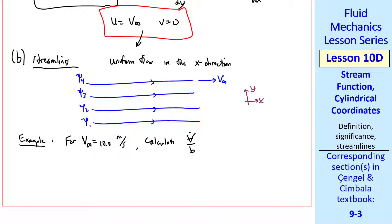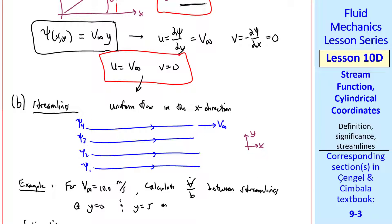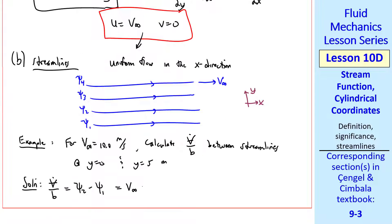Suppose V_infinity is 10.0 meters per second. Let's calculate V_dot over B, where B, as before, is the distance into the page. So this represents a volume flow rate per unit width into the page. And we'll calculate that between streamlines at Y equals zero and Y equals five meters. Well, V_dot over B is psi_2 minus psi_1. And since psi is V_infinity times Y, this would be V_infinity times Y_2 minus V_infinity times Y_1. We'll call this Y_1 and Y_2. When we plug in our numbers, we get 10.0 meters per second times five minus zero meters. So V_dot over B is 50 meters squared per second. Notice that this is a volume flow rate per unit width into the page. So the units are meters squared, not meter cubed, per second.